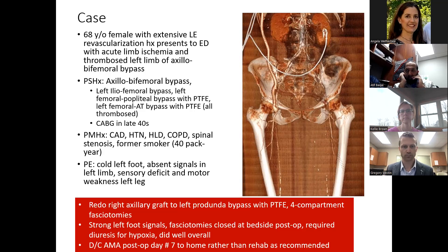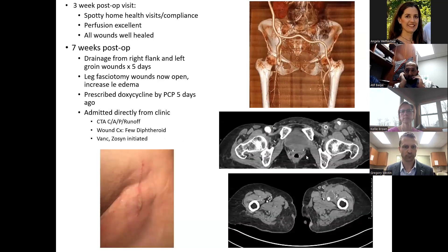I took her to the OR for a redo right axillary graft to left profunda bypass, routing basically a new right to left fem-fem to her left profunda as the only reasonable outflow vessel. She did reasonably well postoperatively and was discharged home on postoperative day seven. At three weeks she looked great — all wounds well healed, perfusion excellent. But she returned at seven weeks with drainage from the right flank at the cutdown site and from the left groin, having dealt with this for five days while a PCP prescribed antibiotics without calling us.